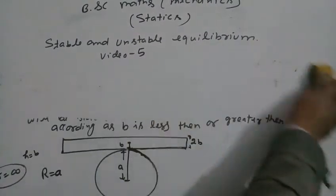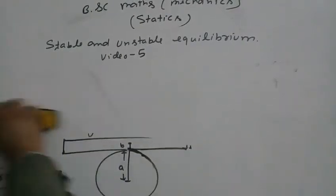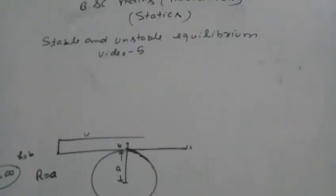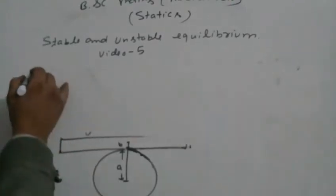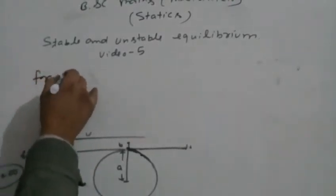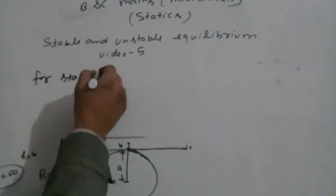Question a and b: stable and unstable condition. r equals infinity. For stable equilibrium: 1/h is greater than 1/r plus 1/R.